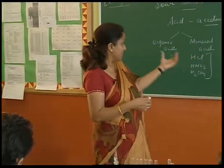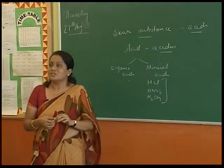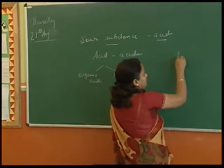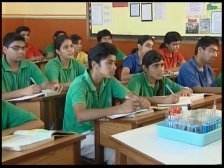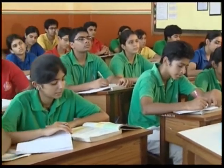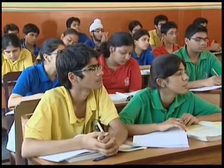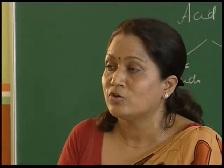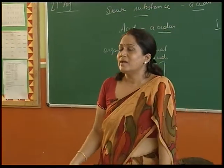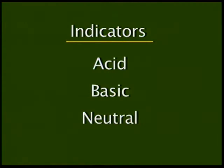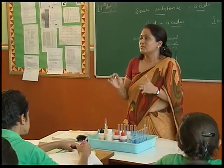To classify substances on the basis of their acidic or basic nature, you use a certain class of substances called indicators. What is the need of these indicators? To differentiate. If I want to know the chemical nature of a substance around me, I can't taste it — an unknown sample might be harmful. So we use certain substances which help us identify whether a material is acidic, basic, or neutral. Indicators indicate what the chemical nature of that substance is.